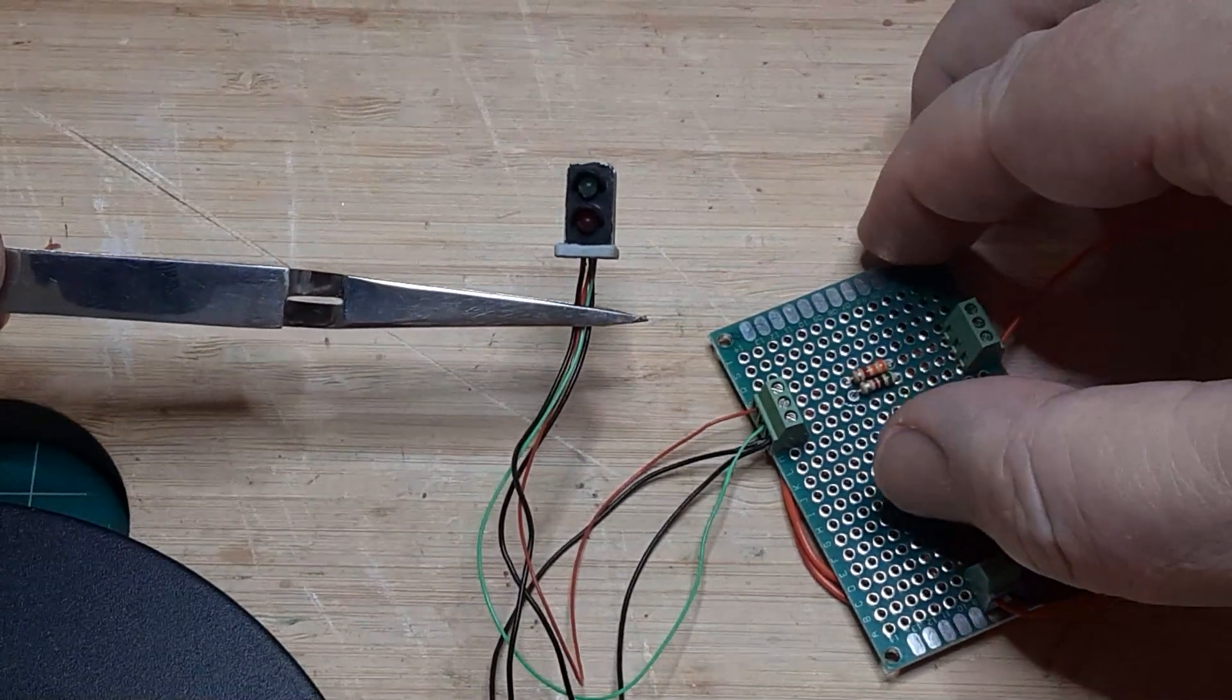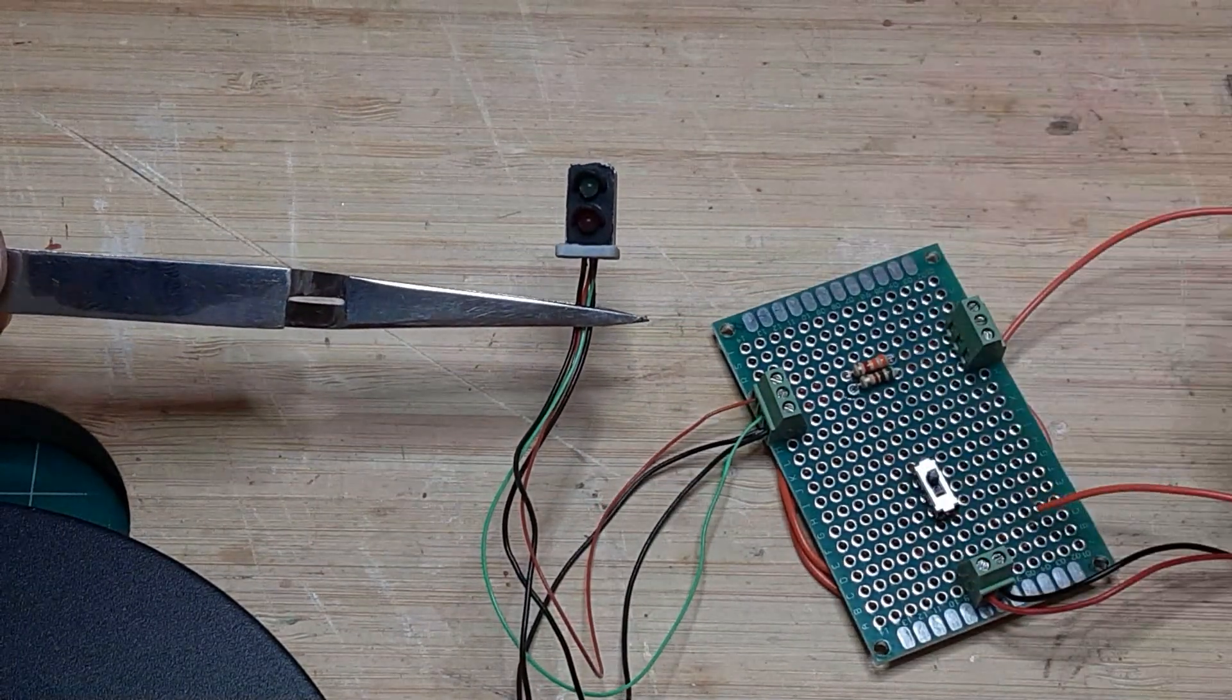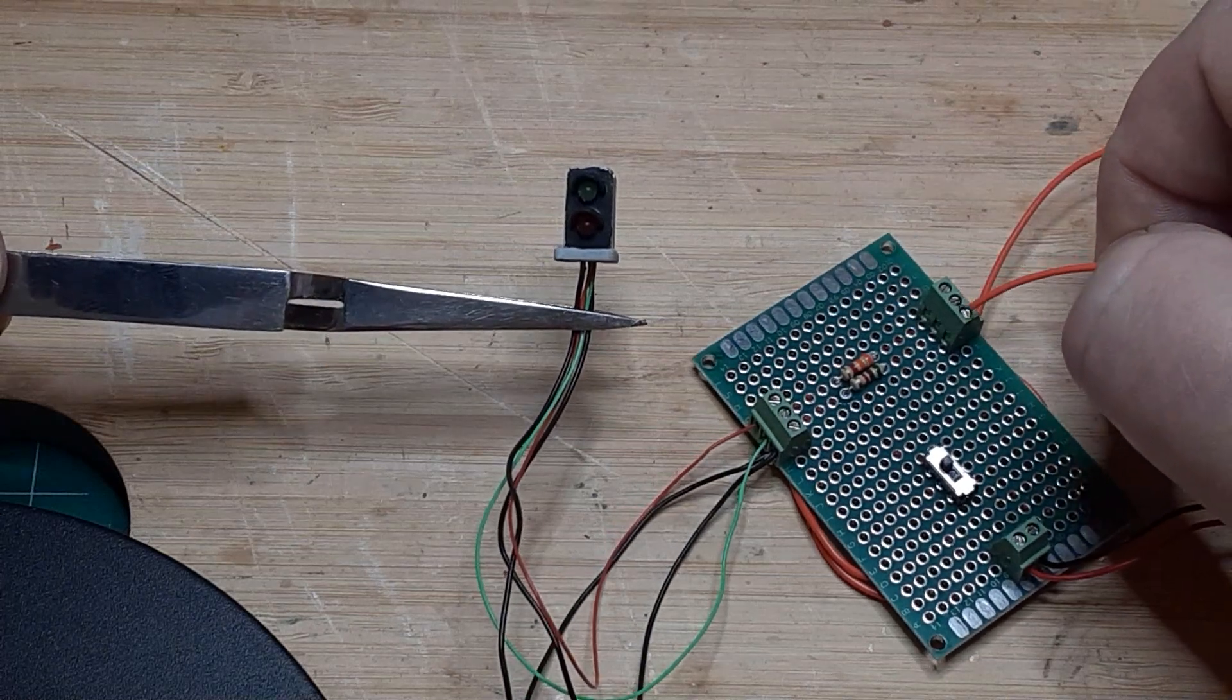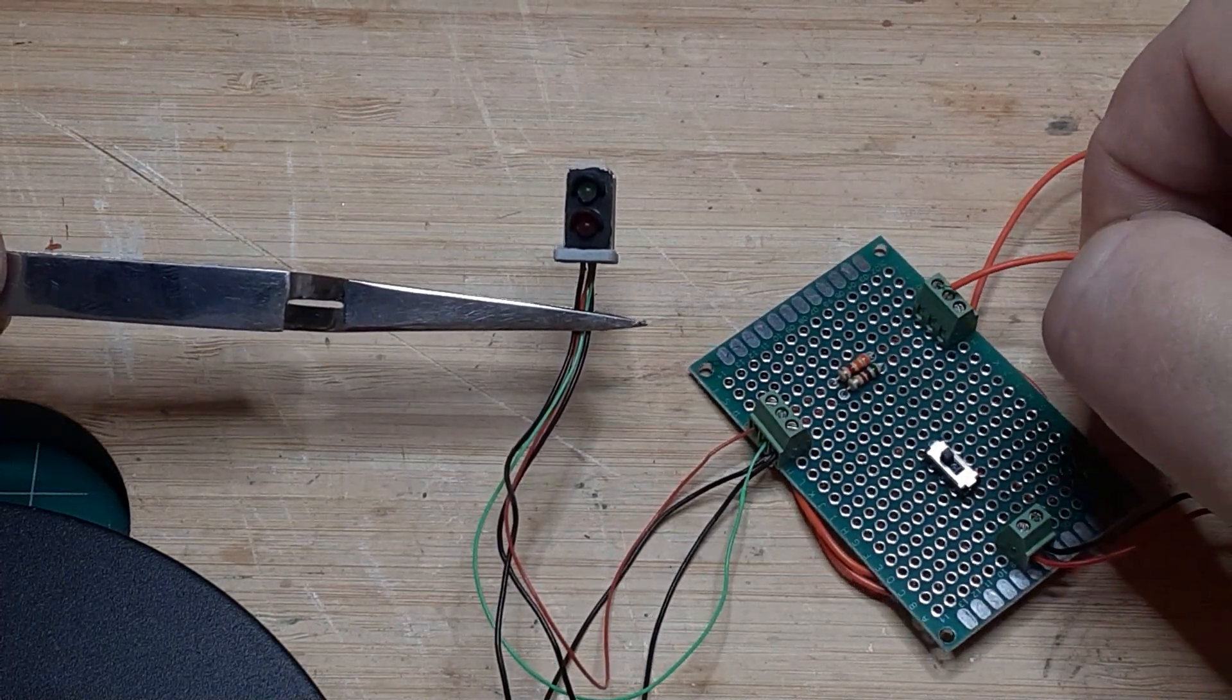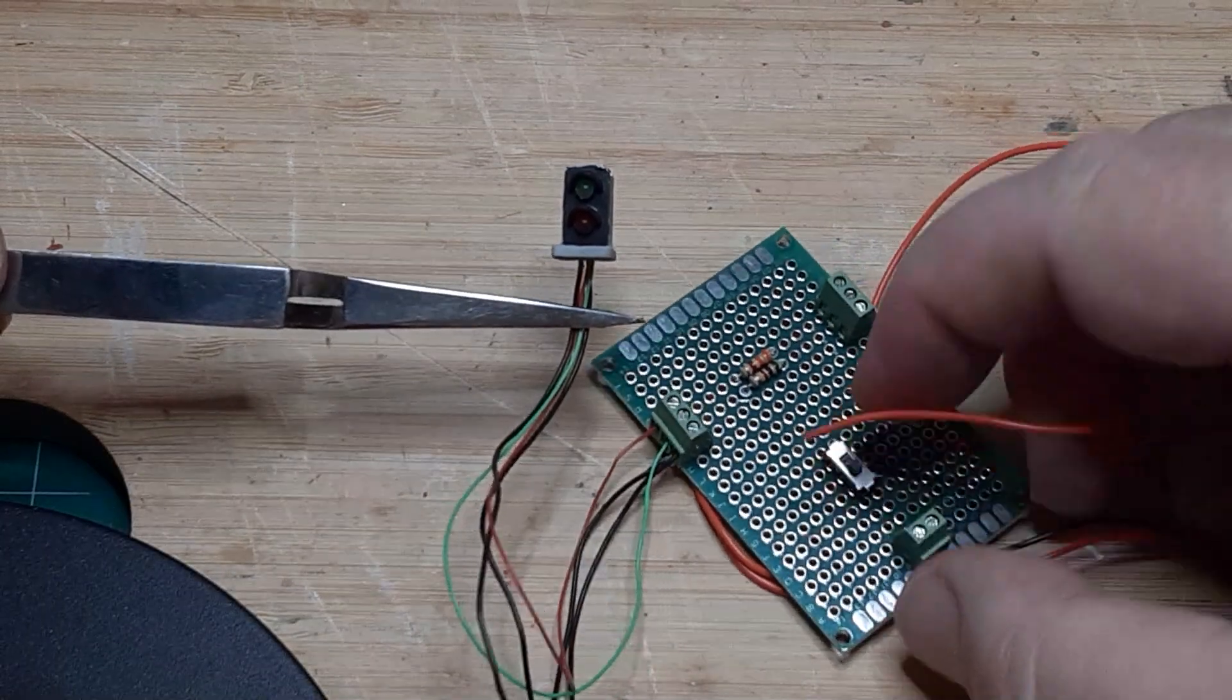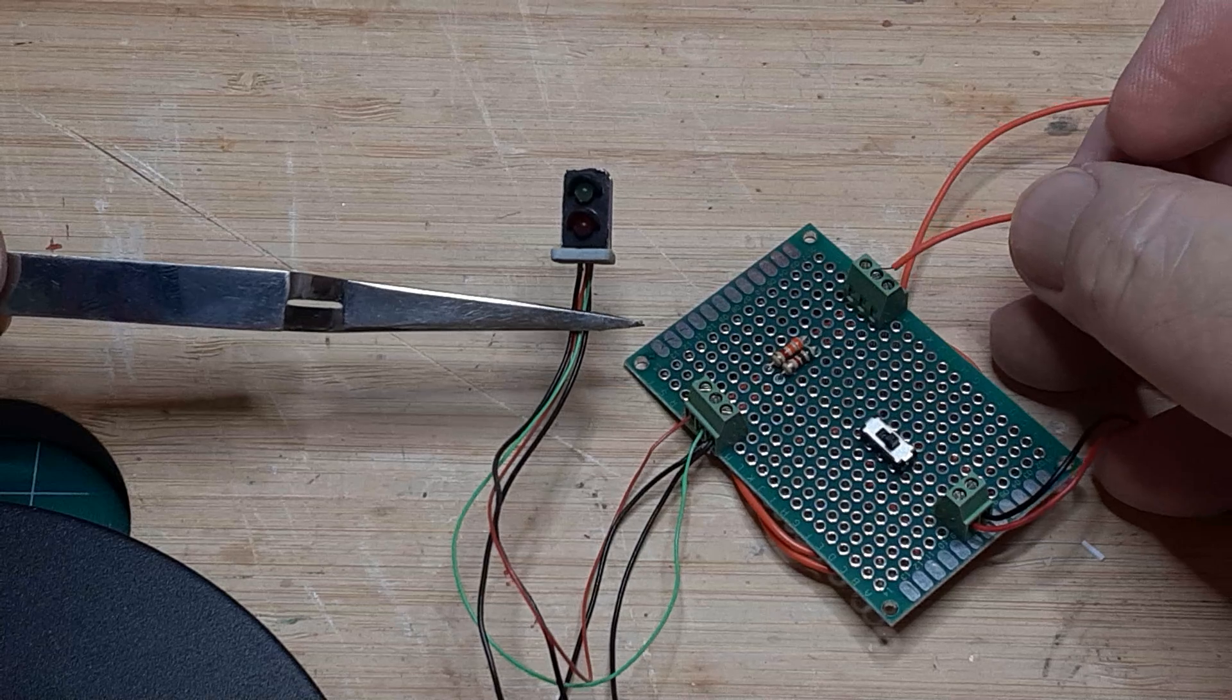If nothing lights, the DPDT switch is in the wrong position. Flip the switch and try again. The LEDs should light this time. Mark the correct switch position as common anode. And mark the other position as common cathode.